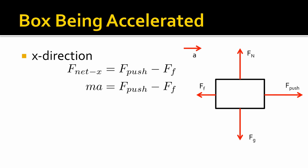Our F net is going to be the sum of F push and friction force. F push is positive, friction force is negative, so we get F net equals F push minus F friction. F net always equals ma, so we can replace F net x with ma, and we get ma equals F push minus F friction.